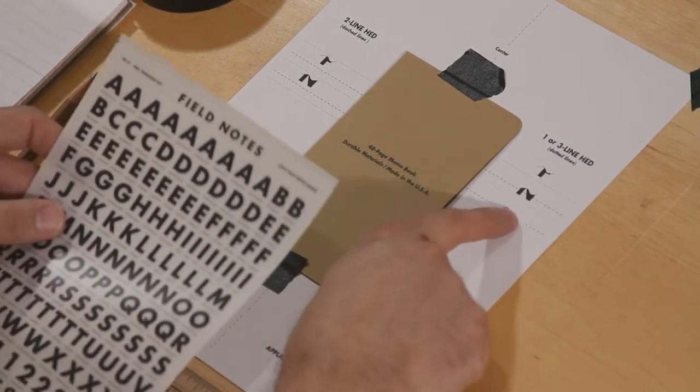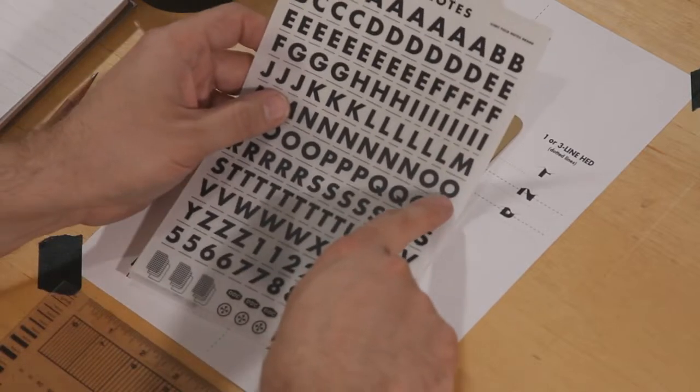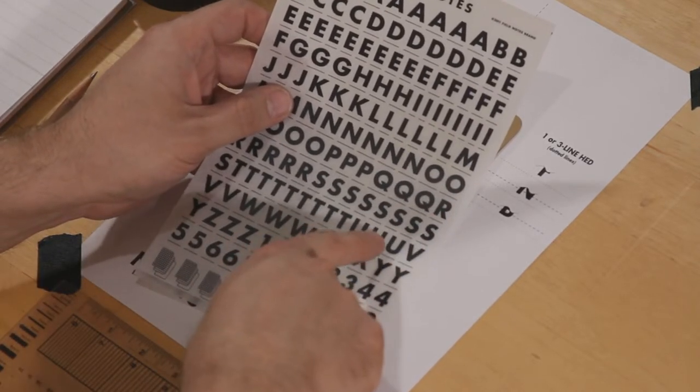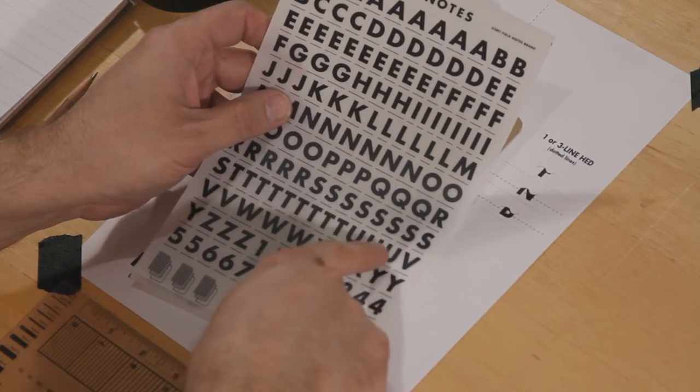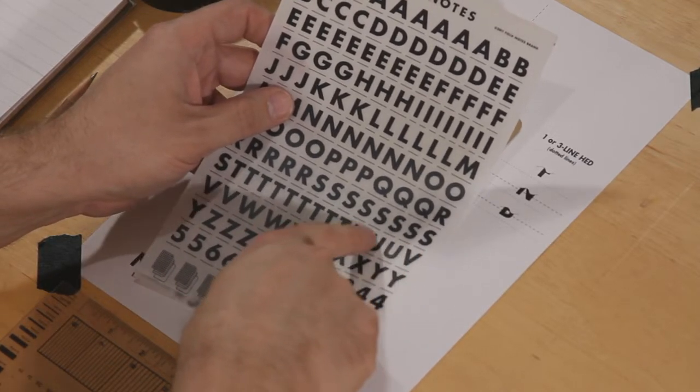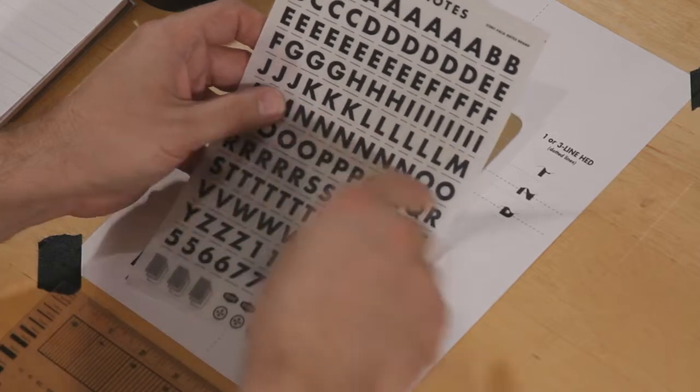The reason the lines are offset from the type is because a letter like O, or any other letter with a round bottom, does not actually sit on the baseline. That curve sits below the baseline a little bit. So we're going to use these lines on the template to align the type, which are standardized for each letter.